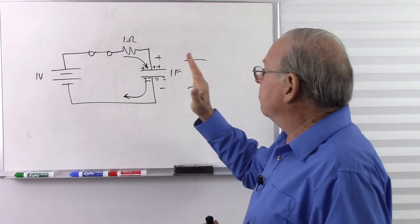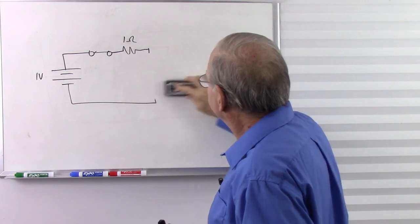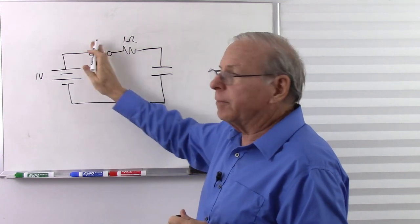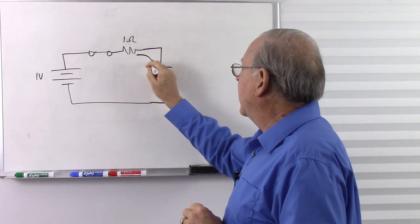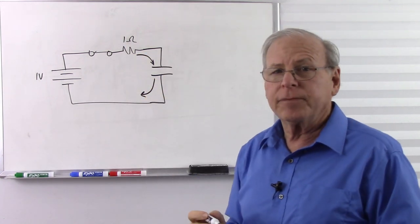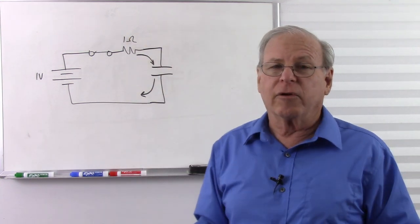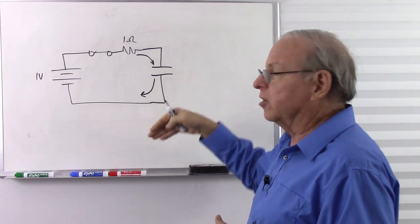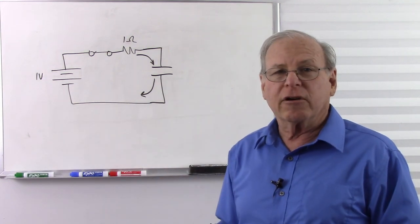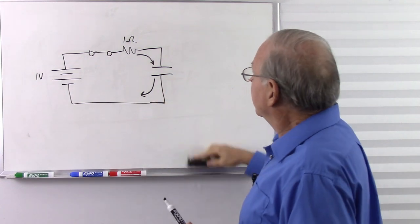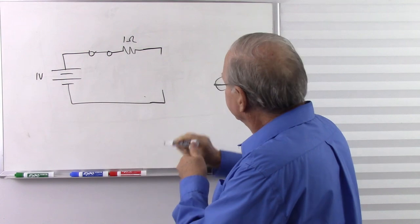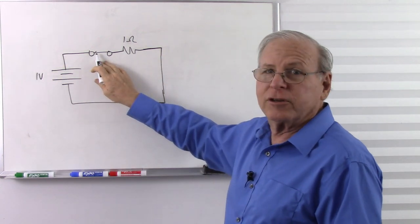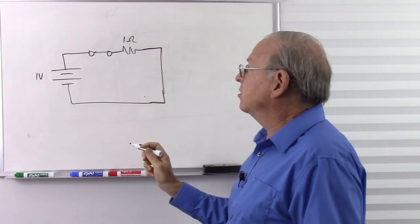At the moment we flip the switch, current starts flowing into the capacitor and at the same time current flows out of the capacitor. A surge of current is going in, a surge of current is going out — it looks like current is flowing right through the capacitor. Of course it's not; the electricity is piling up on one side and being pushed off the other. So what does the capacitor look like right now? It looks like a short circuit.